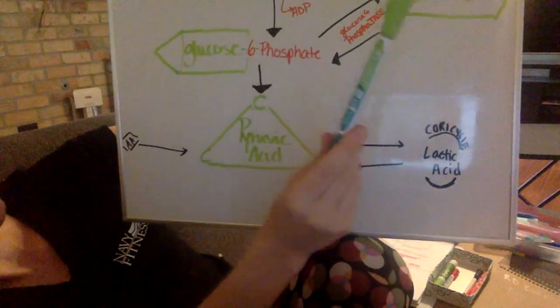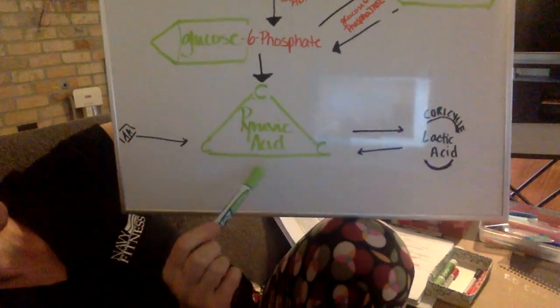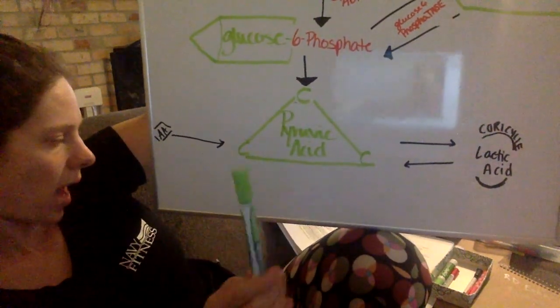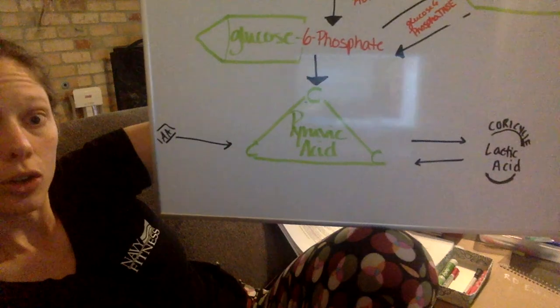We have glucose or glycogen going to glucose 6-phosphate, going to pyruvic acid. Then our pyruvic acid is going to go to acetyl-CoA. That's where we're going to start talking about our Krebs cycle.